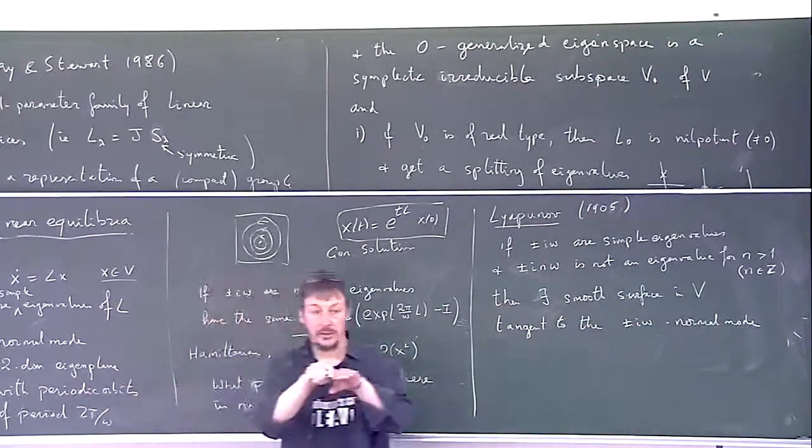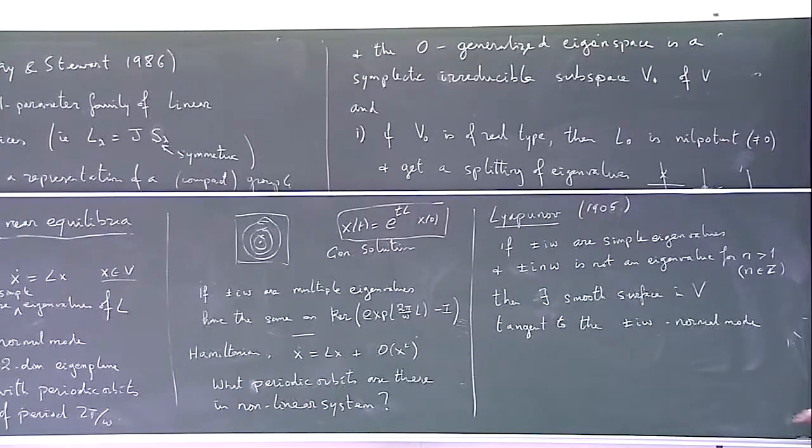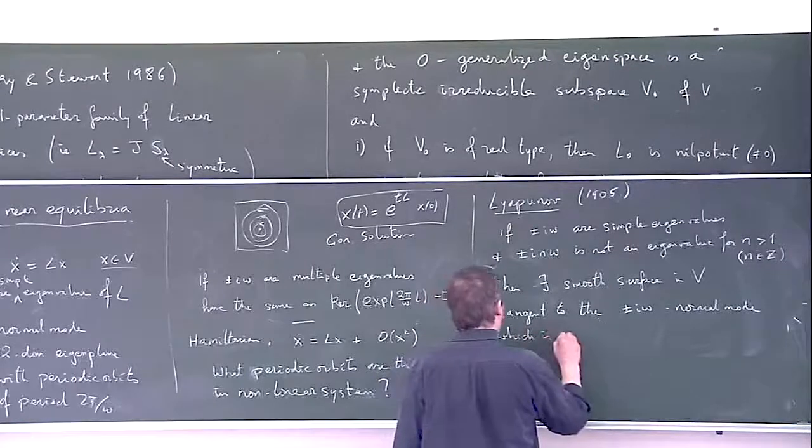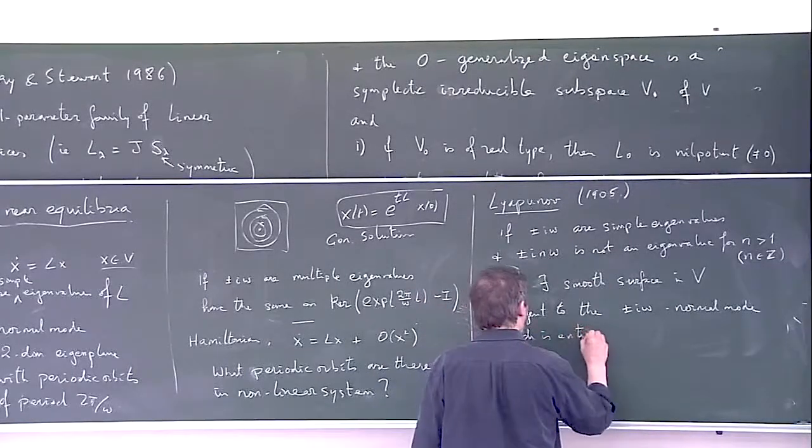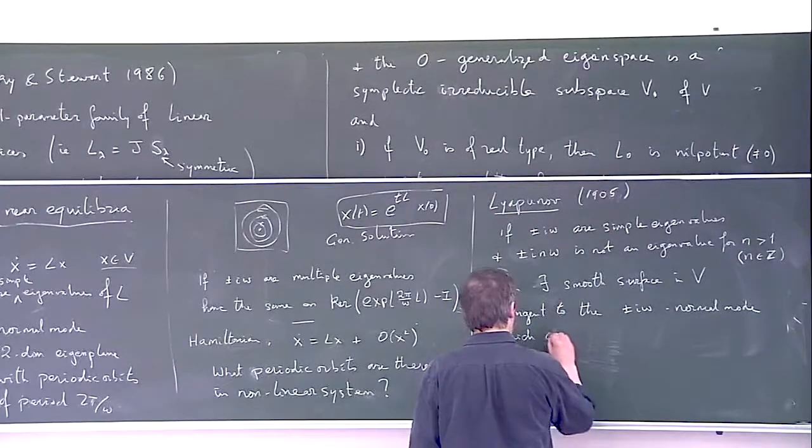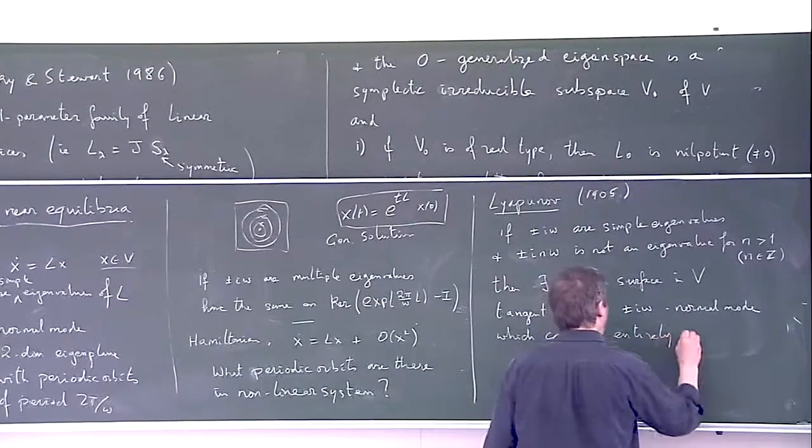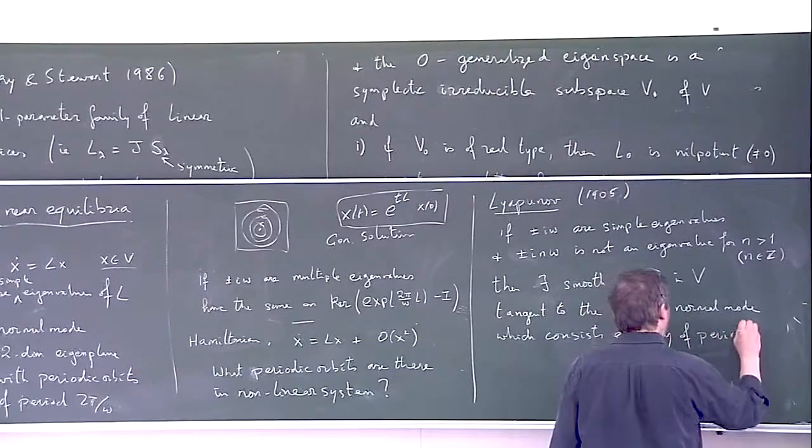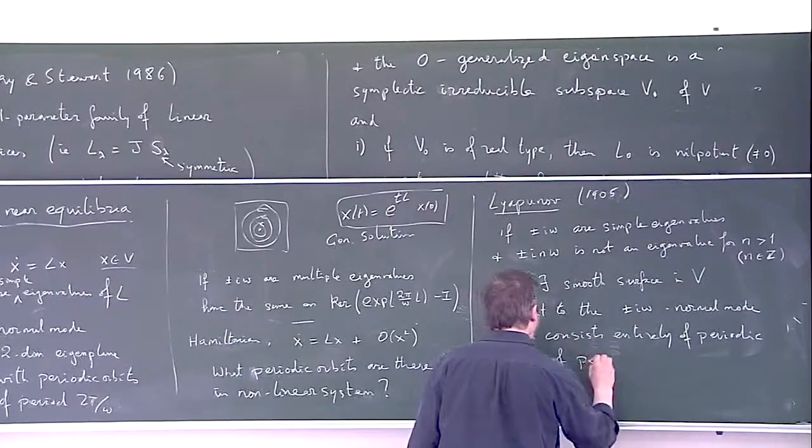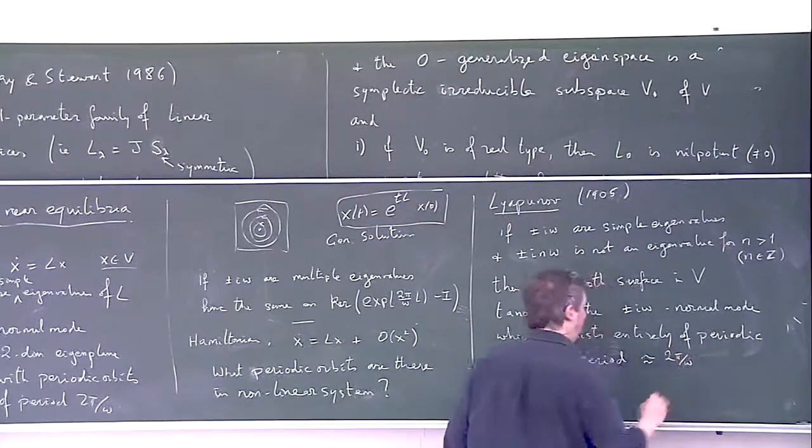Then there exists a smooth surface in V where the dynamical system, the Hamiltonian system, is tangent to the normal mode. The normal mode is this eigenplane, so it's a linear subspace. Now we have a curved surface possibly curved, tangent to this plane, which consists entirely of periodic orbits.